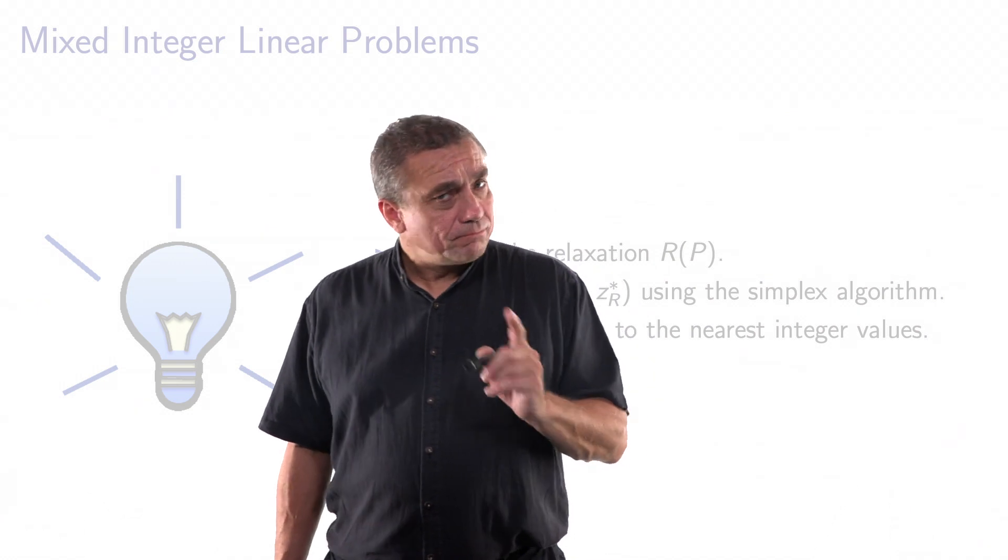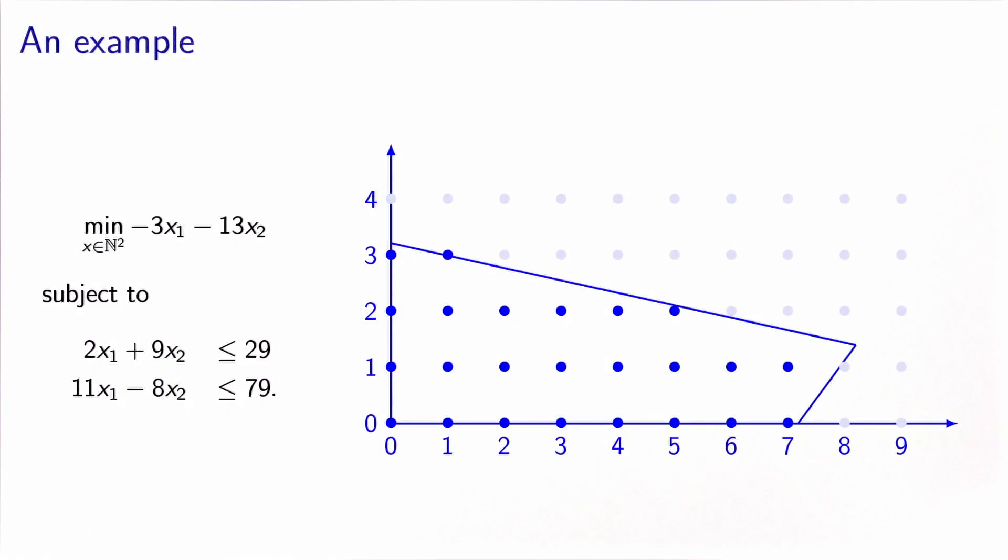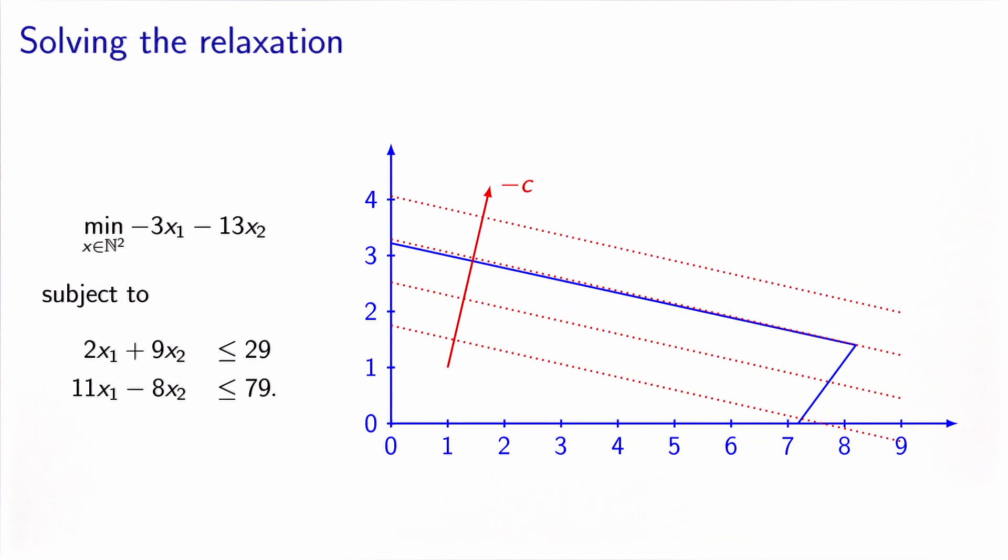Well, actually, it's not a very good idea. And let's try to understand why on a simple example. So consider this example that we have used before, where the feasible set is the intersection of the polyhedron here, and the lattice of all possible integer values. So in order to apply my idea, what I will do, I will first forget the lattice and solve the relaxation.